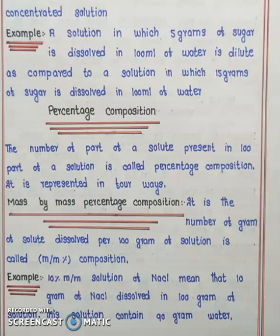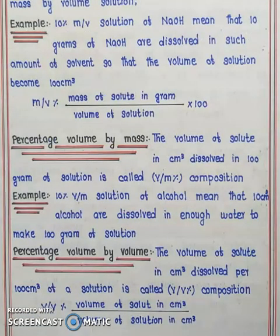Now we will discuss about percentage composition. The number of parts of a solute present in 100 parts of a solution is called percentage composition. It is represented in four forms. First, mass by mass percentage composition: it is the number of grams of solute dissolved per 100 grams of solution. For example, 10% m/m solution of sodium chloride means that 10 grams of sodium chloride is dissolved in 100 grams of solution. This solution contains 90 grams of water. The formula is: m/m percentage = mass of solute in grams divided by mass of solution in grams, multiplied by 100.